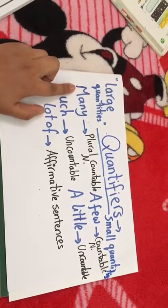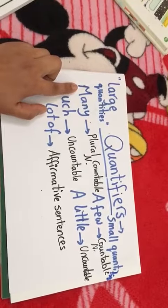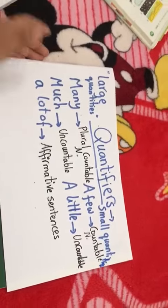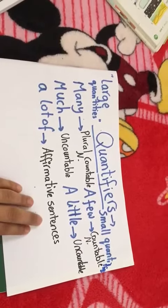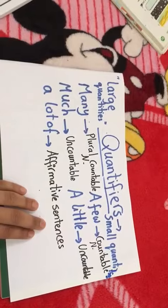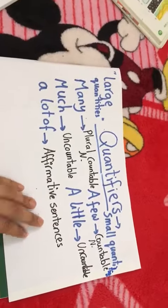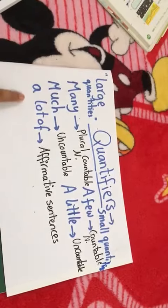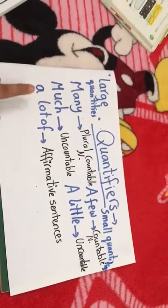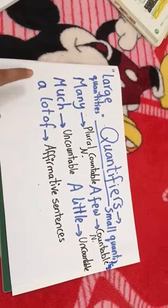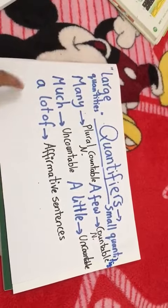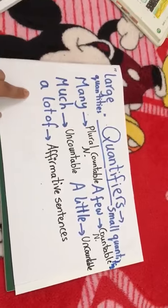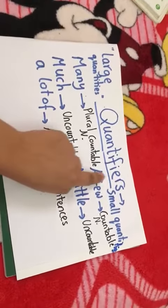In a negative sentence or question, we use 'any', and in an affirmative sentence we use 'a lot of'. For example: there are a lot of students in class, there is a lot of jam in the door, there is a lot of milk in the glass.